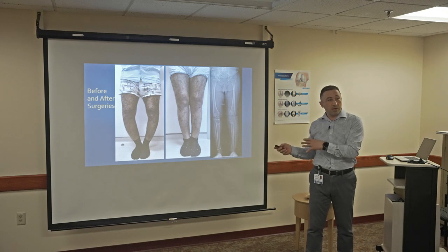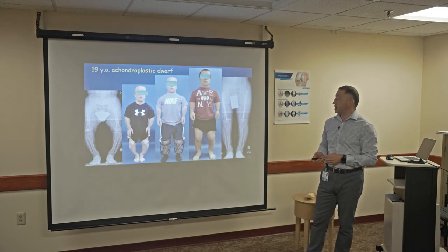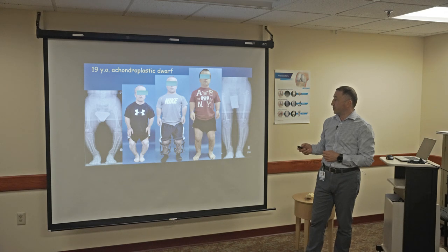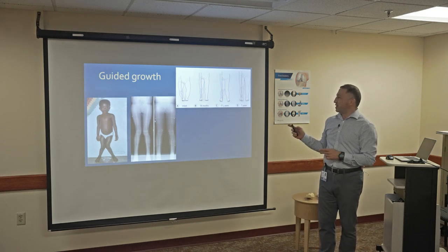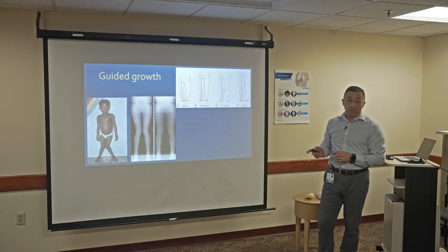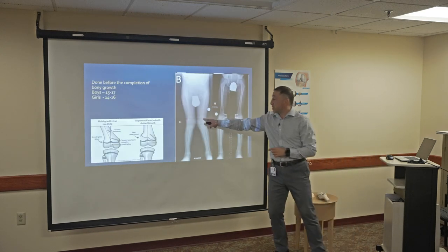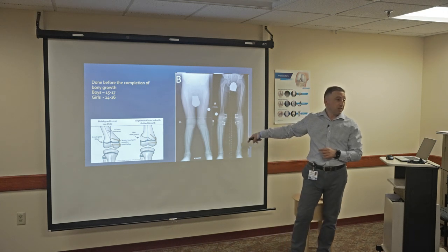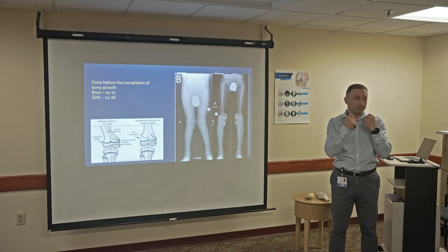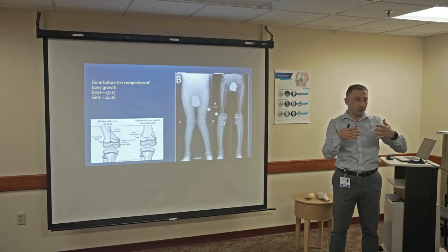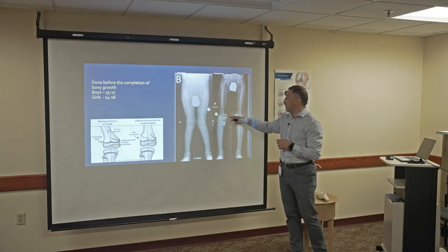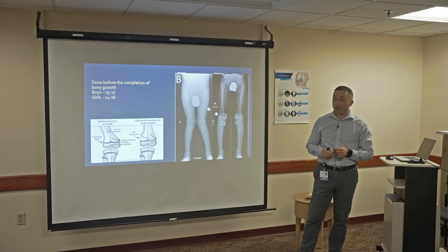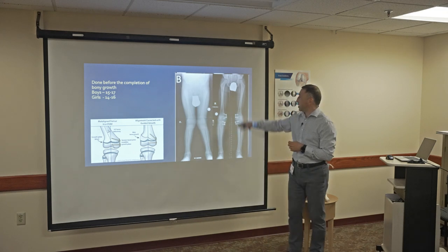When we correct deformity, we avoid wear and tear. When deformity persists, at the end we have wear and tear. We also corrected a dwarf patient's knees and made him taller. With kids who are still growing, we have another possibility to correct knock knee deformities with small surgery — like putting braces on teeth. With growth, the teeth get straighter, and similarly, with these small plates, we can correct knock knee deformities without major intervention. Here you can see the knock knee deformity on x-ray, and here it's straight.